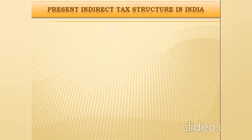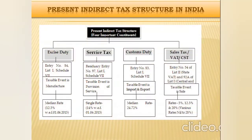Next, we will get an overview of the present indirect tax structure in India. This present tax structure has four important constituents. First, excise duty — the provisions are listed in Entry Number 84, List 1, Schedule 7, and its taxable event is manufacturing.